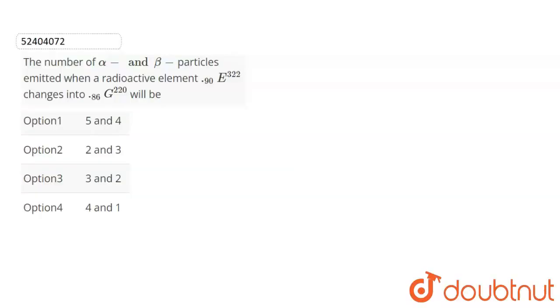Watch the question carefully. The number of alpha and beta particles emitted when a radioactive element 93, it should be 232, changes to 86, G222. A slight mistake is there.